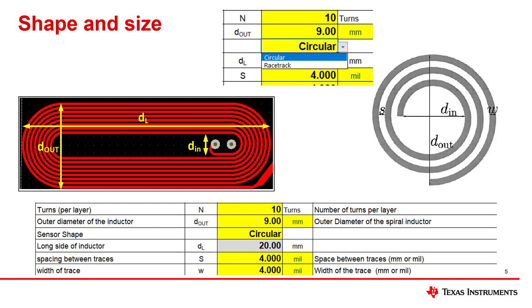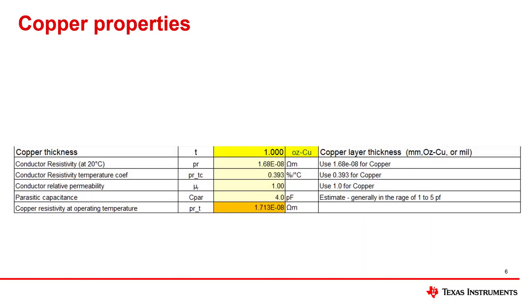For my design I'm using a circular 9 mm coil because it fits nicely into the available space and is smaller than my target, giving good coupling between sensor and target. Based on the outer diameter, I've chosen a 4 mm trace width and spacing. Ten turns per layer gives me a good coil fill ratio, which I'll discuss soon. The last input in the top section is the copper thickness, tied to the PCB manufacturing process. For my design I'm using one-ounce copper.